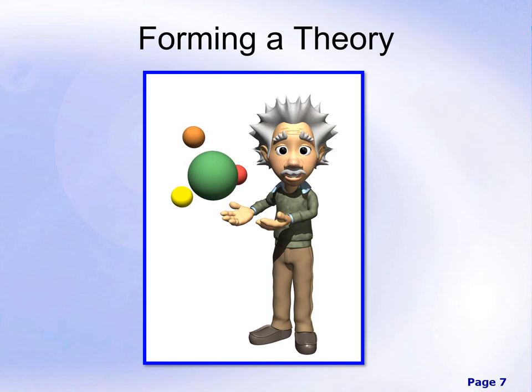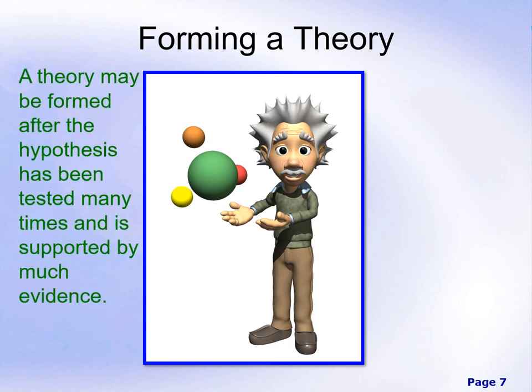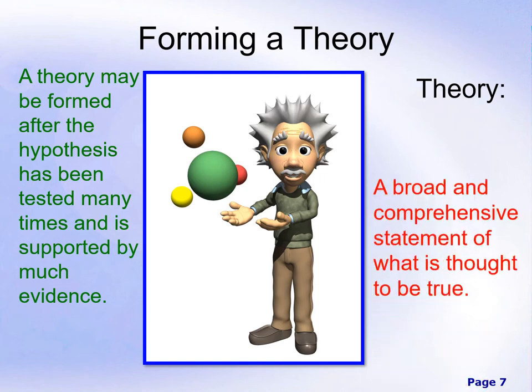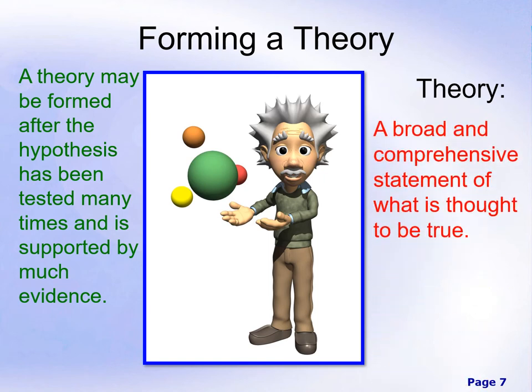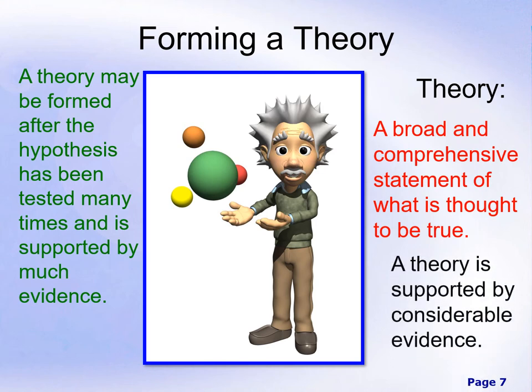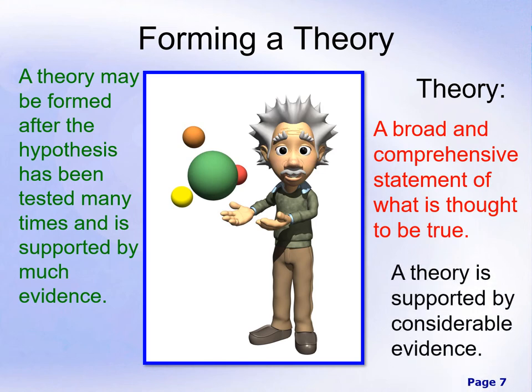When we say something is a theory, that means it's actually been tested scientifically and has some support behind it. A theory may be formed after the hypothesis has been tested many times and is supported by much evidence. A theory is defined as a broad and comprehensive statement of what is thought to be true. It's not a guess — you shouldn't say 'my theory is.' You should accurately say 'my hypothesis is.' A theory is supported by considerable scientific evidence.